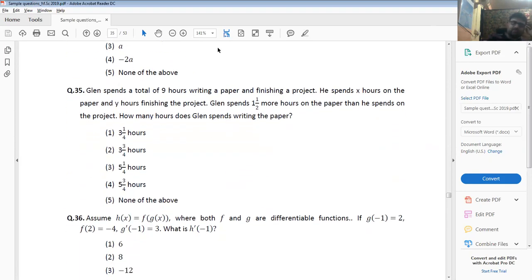Glenn spends a total of 9 hours writing a paper and finishing a project. He spends x hours on the paper and y hours finishing the project, total of 9 hours. So x plus y is equal to 9. And x hours on the paper and y hours on the project, one and a half more hours on the paper than on the project.